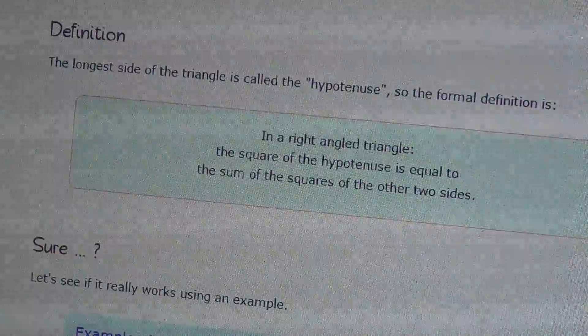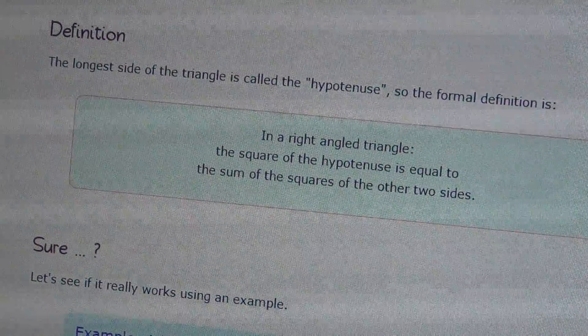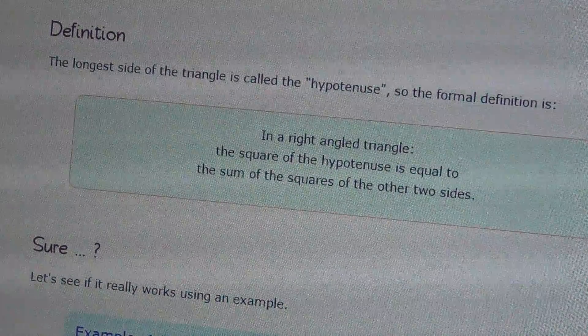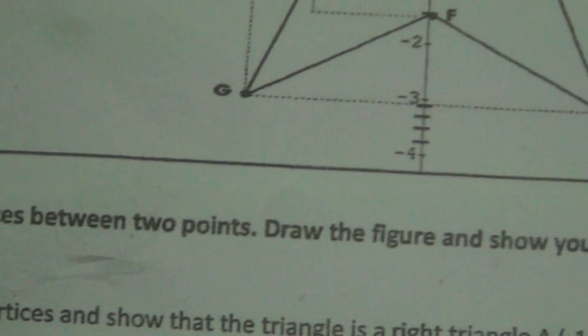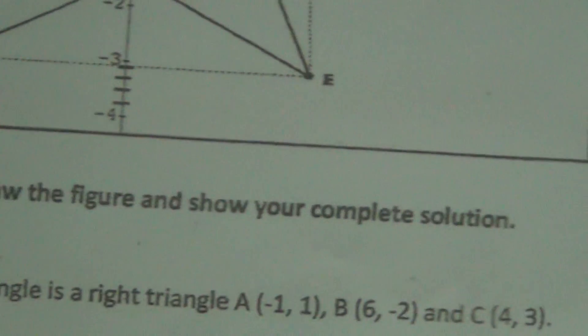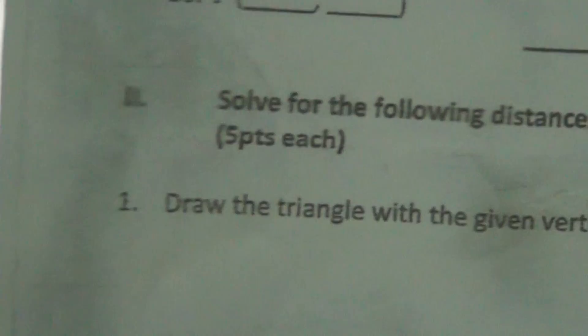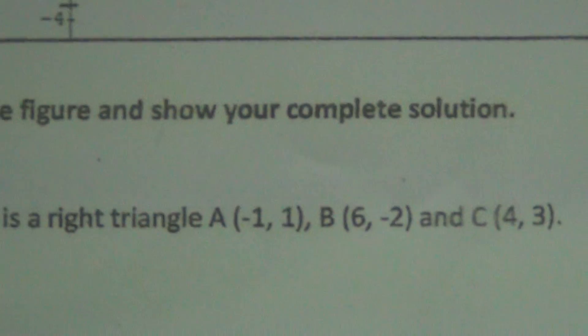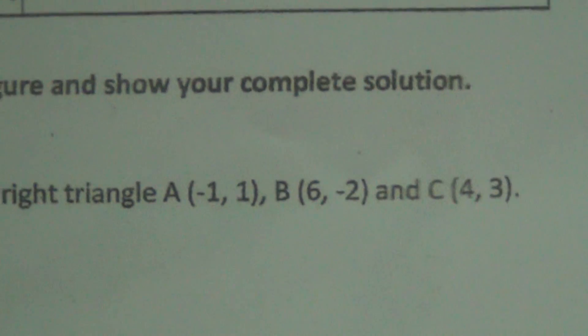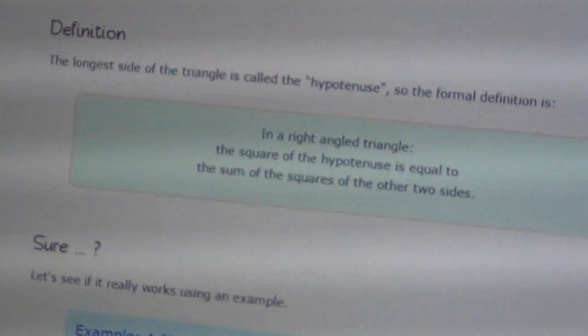That's the Pythagorean theorem. Now let's go to the actual problem of my child. Here is the paper. It says: solve the following distances between two points, draw the figure, and show your complete solution. Number one: draw the triangle with the given vertices and show that the triangle is a right triangle with the given points A, B, and C.